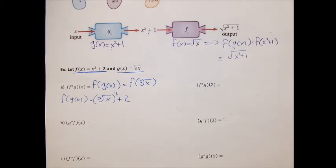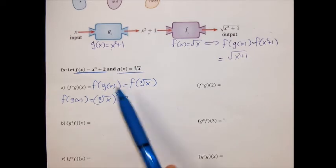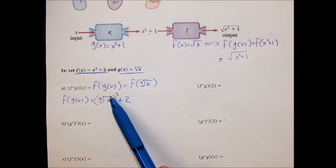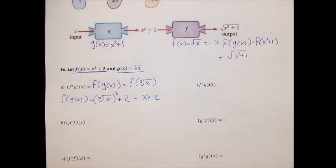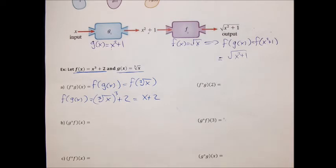A cube root cubed — those two things cancel. So f of g of x simplifies to just x plus 2. On tests and in these problems, I'm not trying to test your algebra skills for the most part. I'm trying to see if you understand the concept of what a composite function is. The point is not to see if you can distribute and simplify — it's whether or not you understand what's happening.